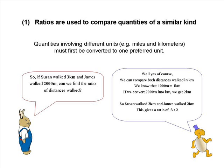So if Susan walked three kilometers and James walked 2,000 meters, is it possible to find the ratio? Yes. We can compare both distances in kilometers. We know that 1,000 meters equals 1 kilometer. So if we convert 2,000 meters into kilometers, we get 2 kilometers.